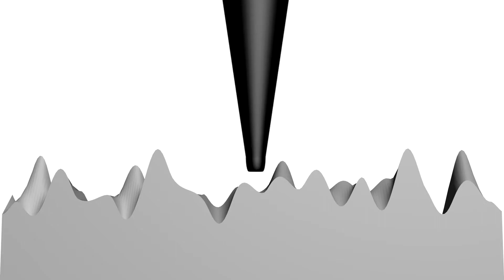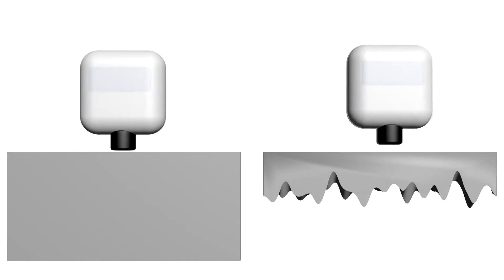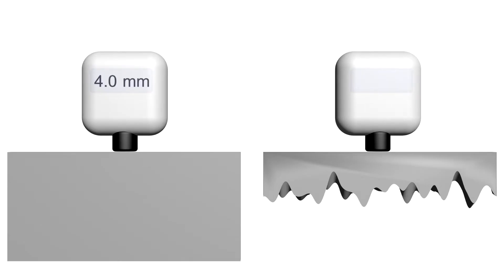Surface probes and profilometers can be used to measure the surface roughness. Pits tend to result in increased surface roughness compared to the surrounding area, making them detectable through such measurements. Ultrasonic testing methods use high-frequency sound waves to assess material thickness and detect subsurface defects. Ultrasonic testing can identify pitting corrosion by measuring the reduced thickness caused by the pits.